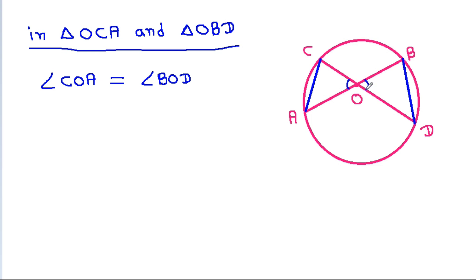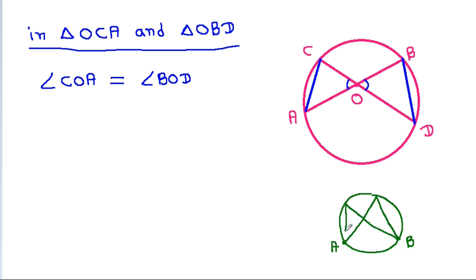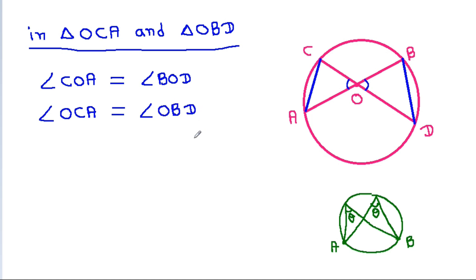And in any circle, from the same arc AB, if we draw two angles on the circle, then these two angles will be equal. So from arc AD, angle OCA will be equal to angle OBD, and from arc CB, angle OAC will be equal to angle ODB.